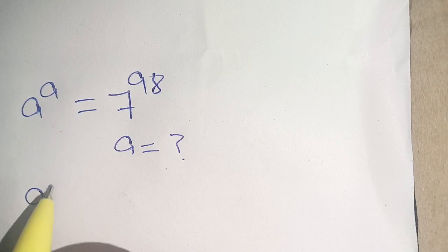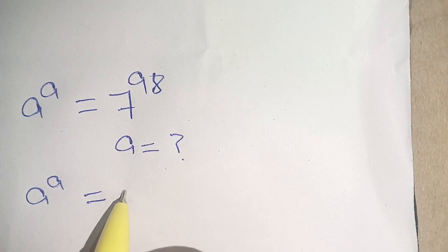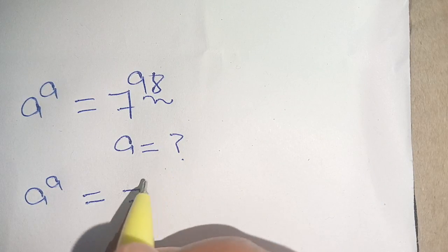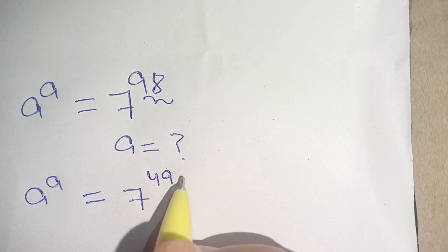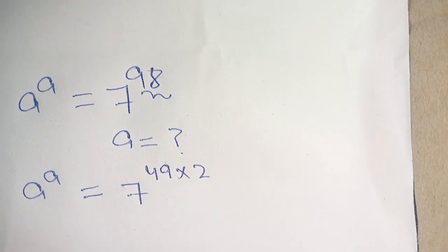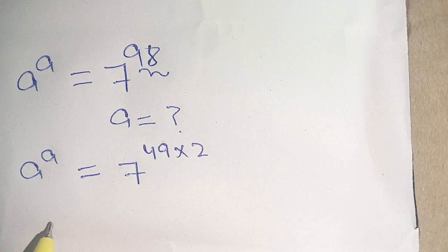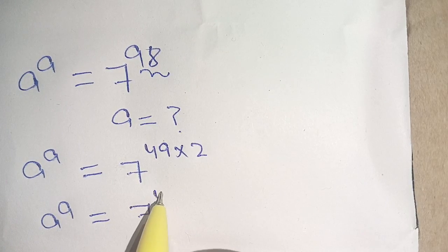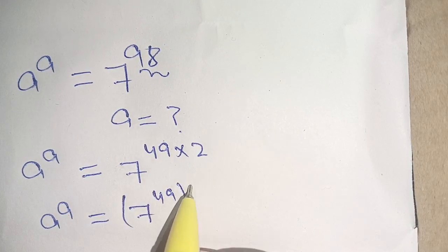We can write this as a raised to power a is equal to 7 raised to power 98. 98 can be broken down as 49 times 2. 49 times 2 becomes 98 and we can write this as a raised to power a is equal to 7 raised to power 49 bracket power 2.